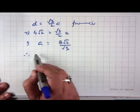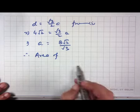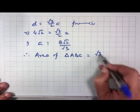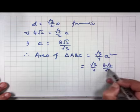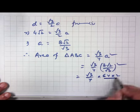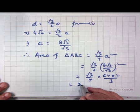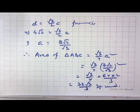Area of equilateral triangle ABC = (√3/4)a² = (√3/4)·(8√2/√3)² = (√3/4)·(64·2/3) = (√3/4)·(128/3) = 32√3/3 square units.